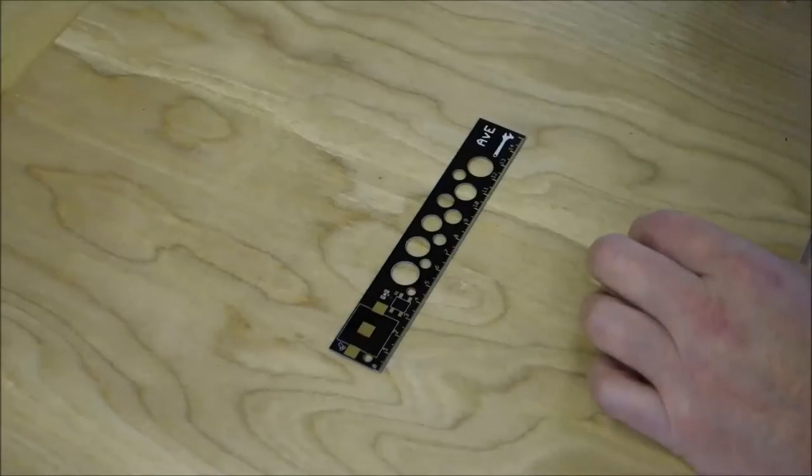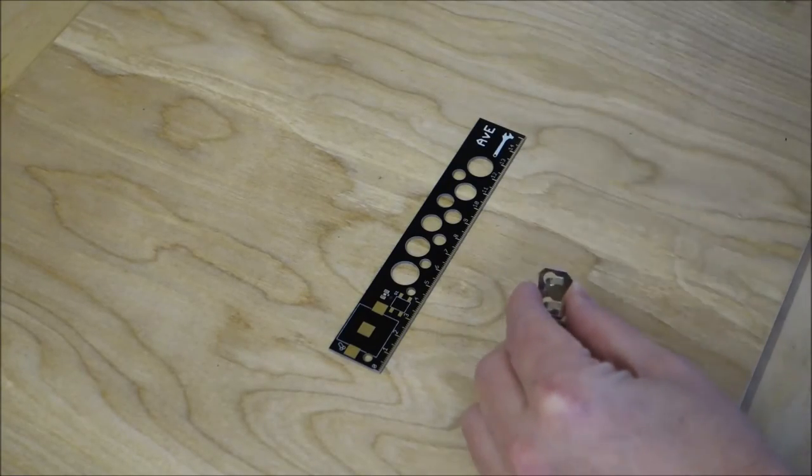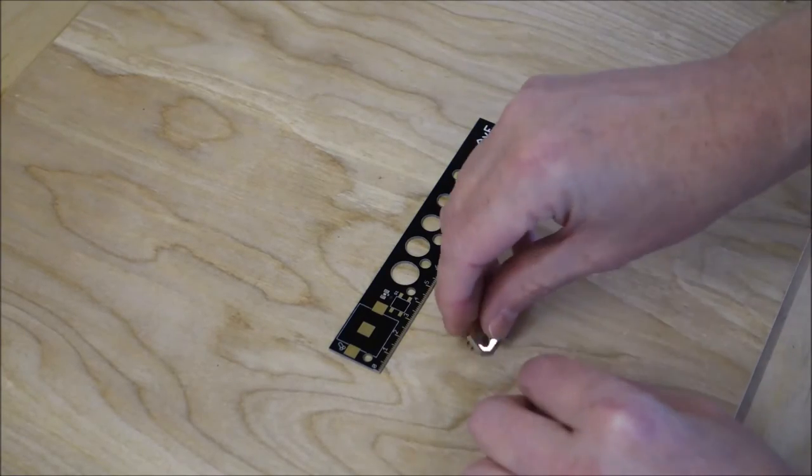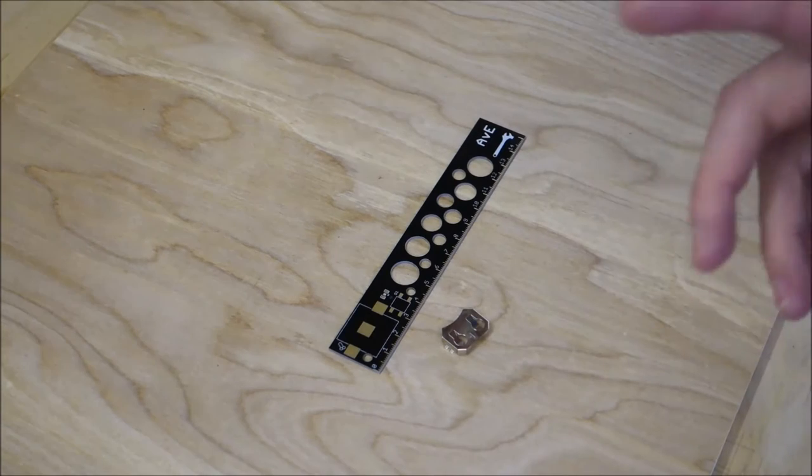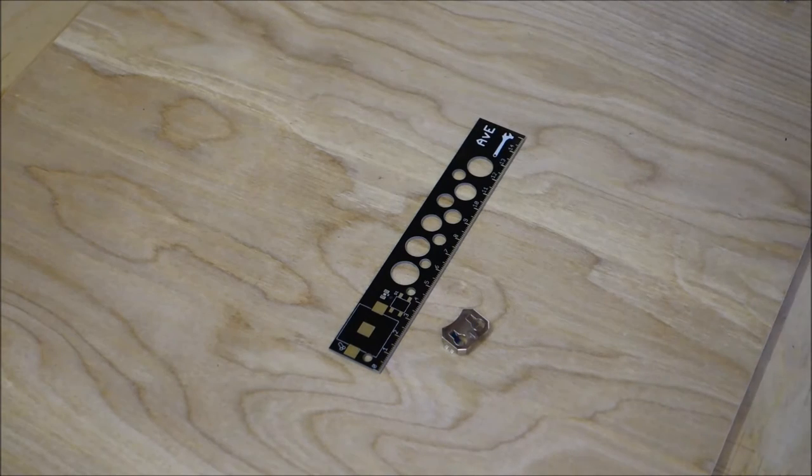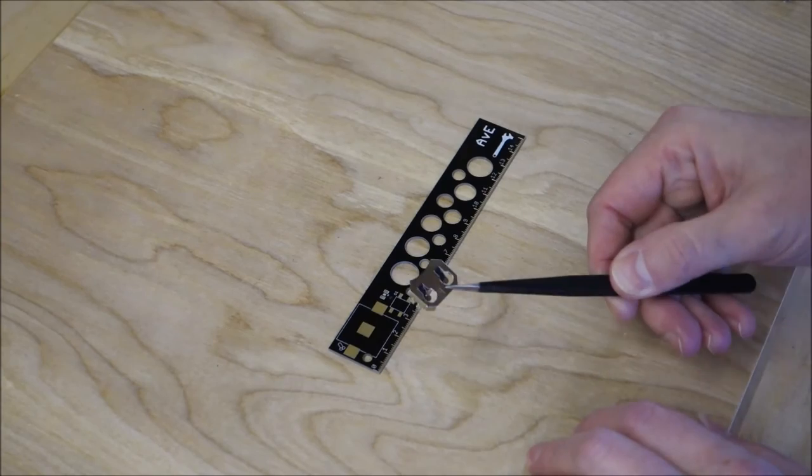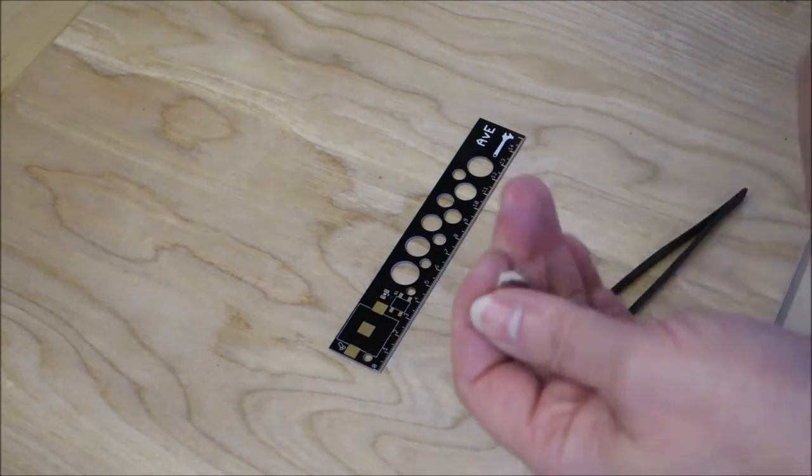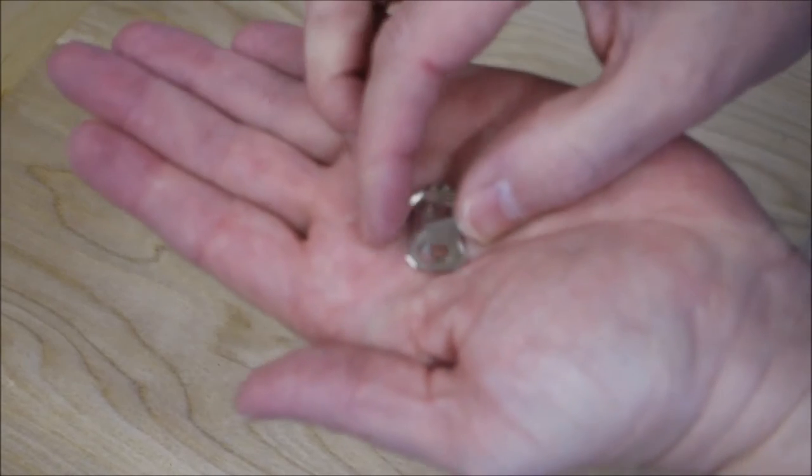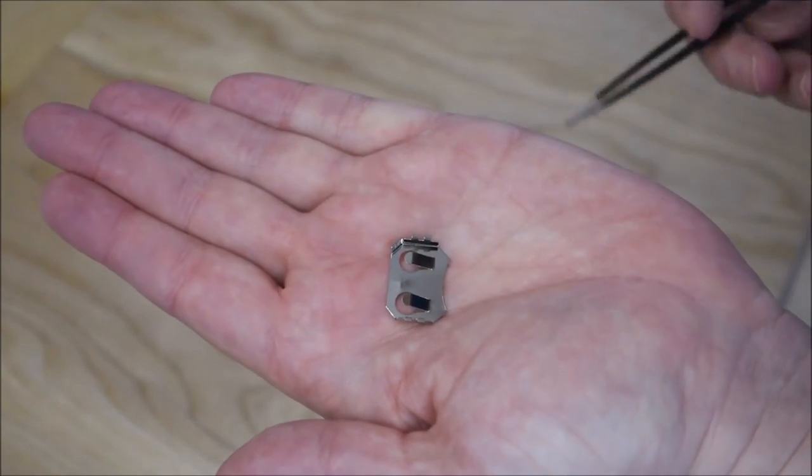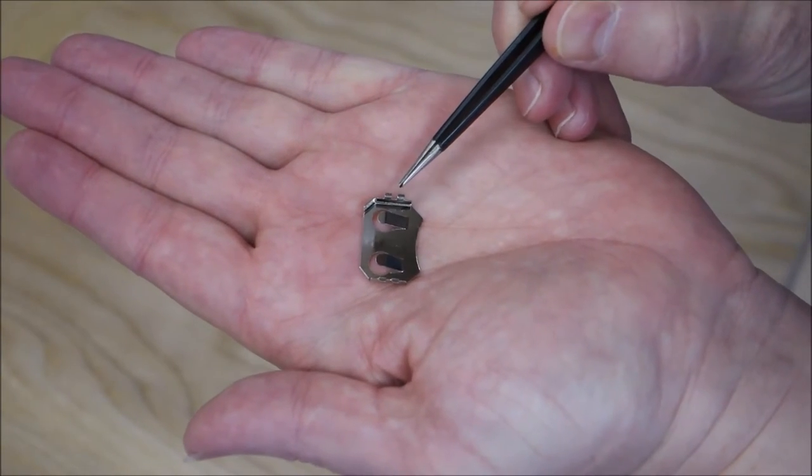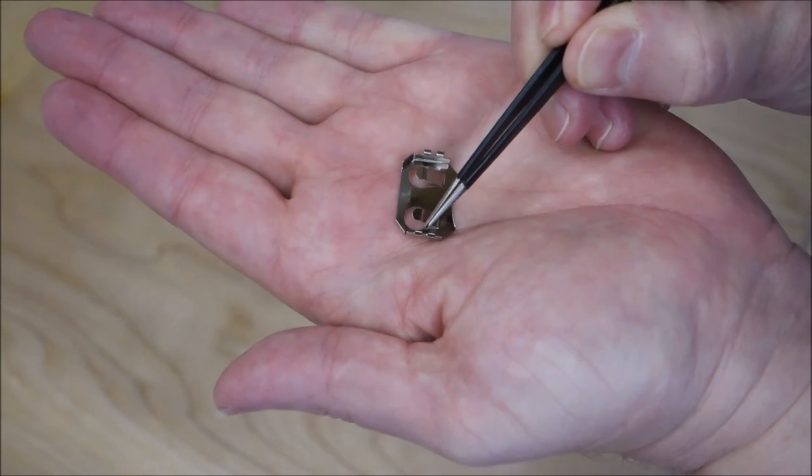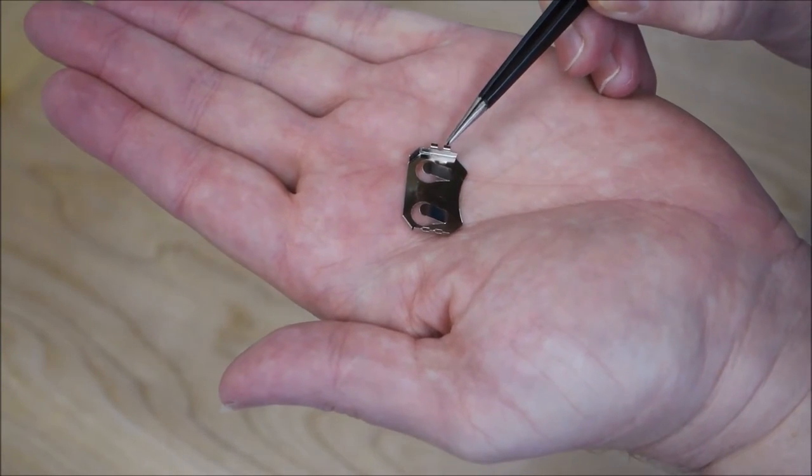I'm going to start with the battery carrier because that's the largest piece. I will say that it helps greatly when you're doing this if you have a nice pair of non-magnetic tweezers. If you look on the ends you see these little metal tabs and that's where the solder goes.